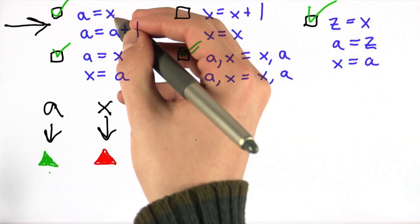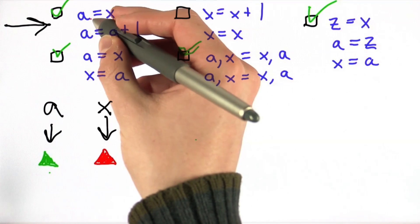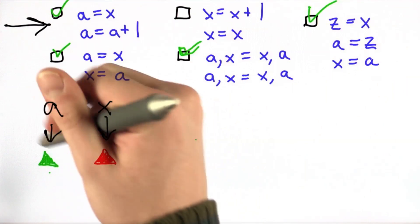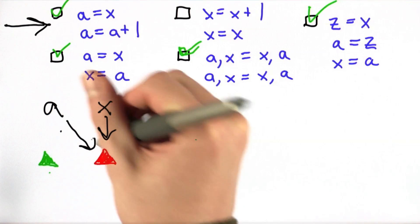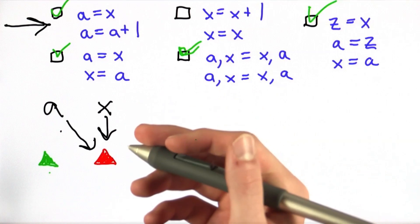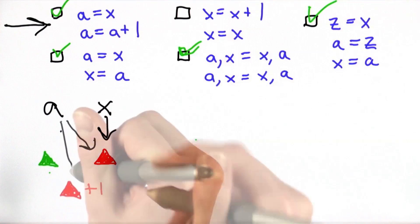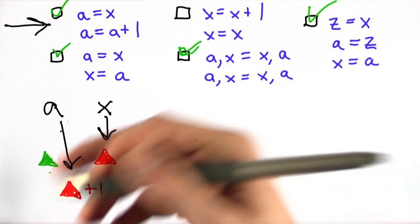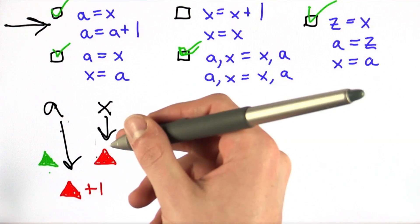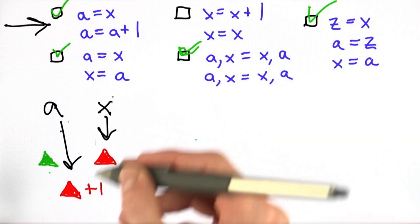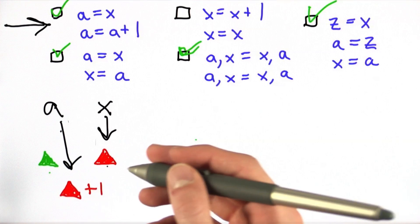The first line of code states that A refers to what X refers to. So let's change that. The second says that A now refers to what A refers to plus one. So now A refers to a new number, which is the red triangle plus one. At the end of these two statements, X still equals what it was originally, and that is the red triangle.